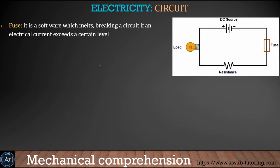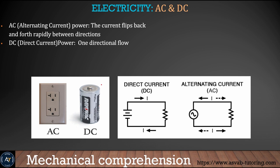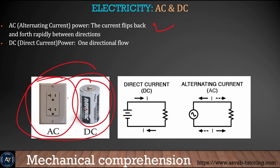A fuse is a soft wire that breaks a circuit when the electrical current exceeds a certain level — similar to how a circuit breaker trips. AC (alternating current) changes direction periodically, while DC (direct current) flows in a single direction, like from a battery. The current we use at home is alternating current.